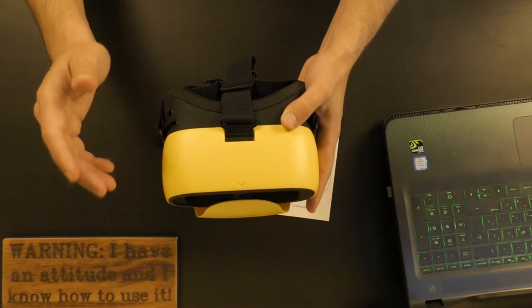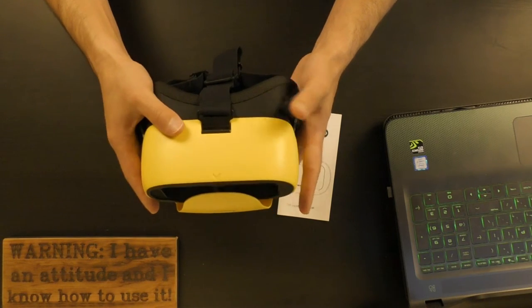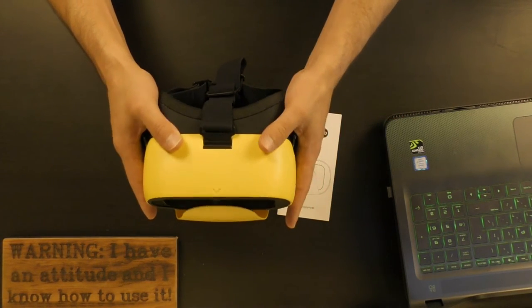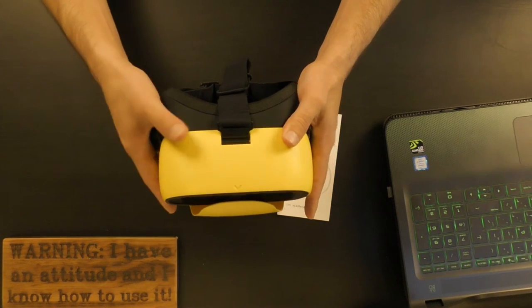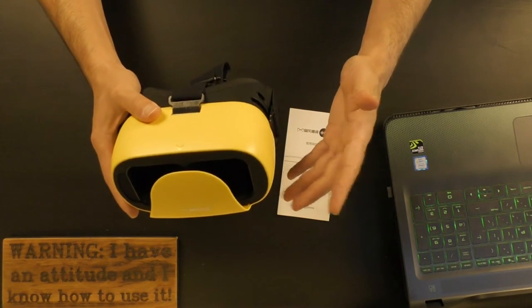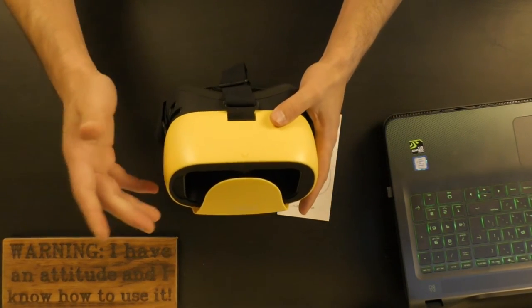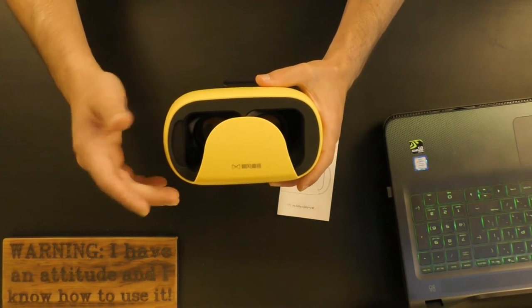As for the design and build quality of the Baofeng Mojing XD VR glasses, I can tell you that they're quite light, made out of plastic. They're very nice to touch, they don't feel cheap at all. I really like the yellow color. I guess they come in different other happy colors like blue and red. They don't have this flipping front panel or anything. You just have this part where you're supposed to place your smartphone inside.